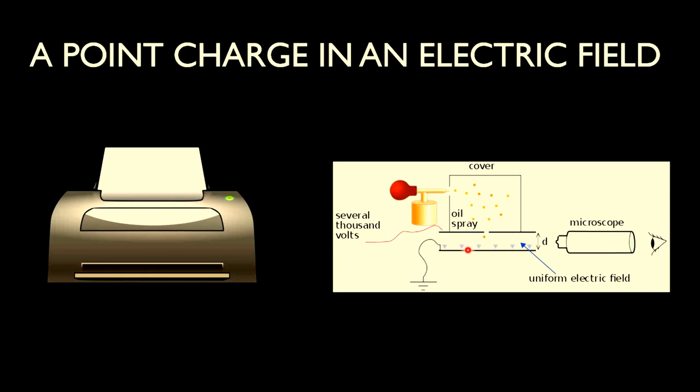Over here, using several thousand volts connected to the earth is a uniform electric field. Over here is a fine atomizer through which oil droplets are sprinkled onto this charge plate, and a microscope was used to find out at what distance the charge is balanced.